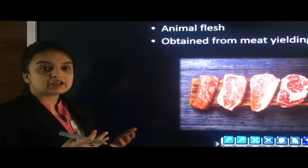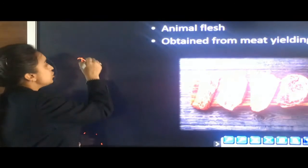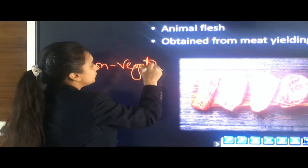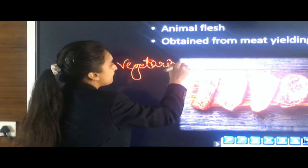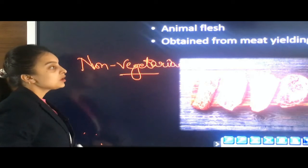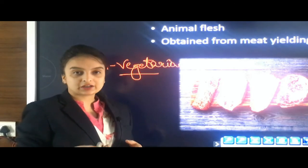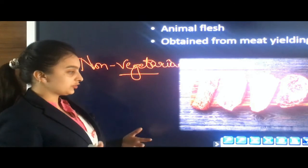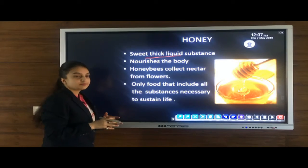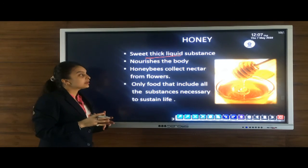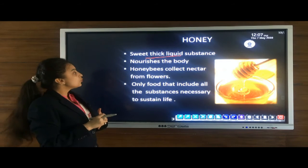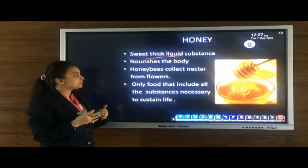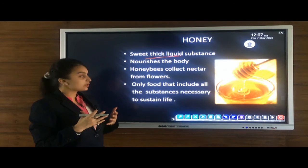Meat is an animal's flesh which is eaten by living organisms. Those who eat meat are considered non-vegetarians. Meat is obtained from meat-yielding animals such as hen, etc. Honey is a sweet thick liquid substance which is a complete food in itself. It is prepared by honeybees and it nourishes the body.